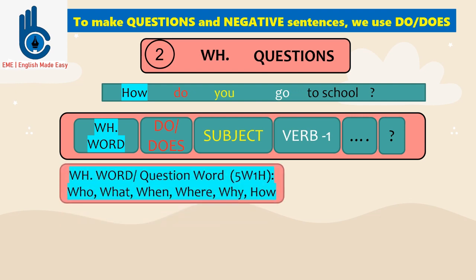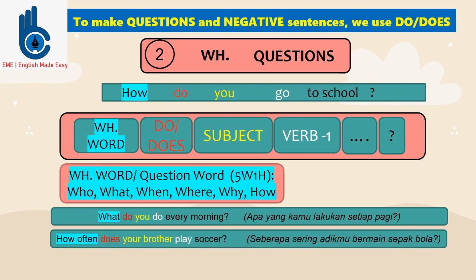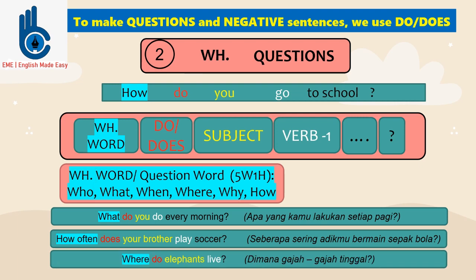WH word, or question word, we call it five W and one H: who, what, when, where, why, or how. For example, we can say: what do you do every morning? How often does your brother play soccer? Where do elephants live?